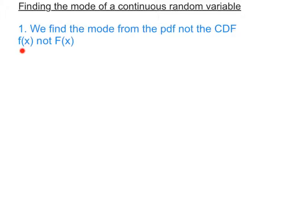In this video we're going to be finding the mode of a continuous random variable. One thing to note is that we find the mode from the probability density function, not from the cumulative distribution function. So just to remind you, the PDF is denoted by small f(x) and the CDF is denoted by capital F(x).